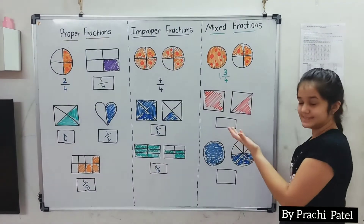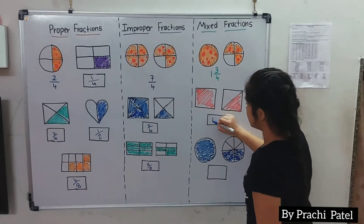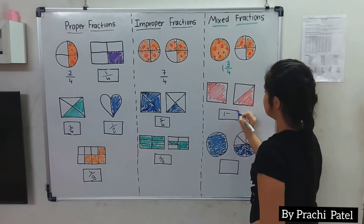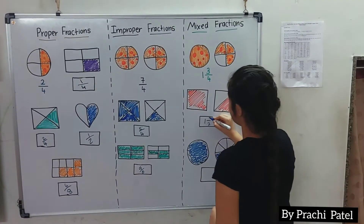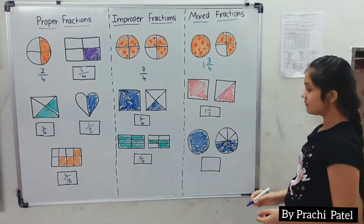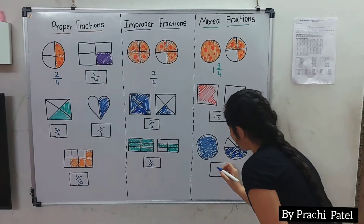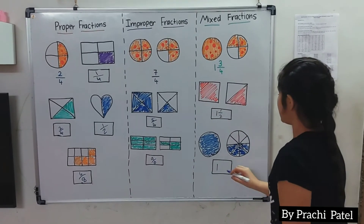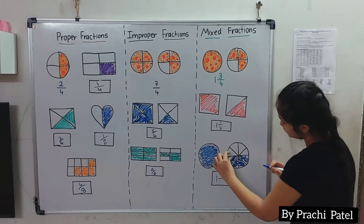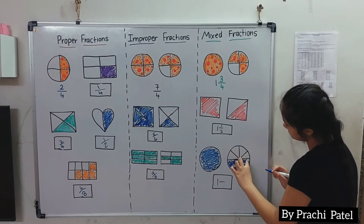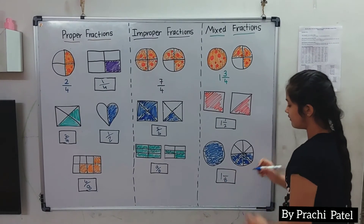Now let's do some more examples. We have 1 whole, so we write 1 in the whole place, then a fraction bar, and 2 pieces with 1 shaded, so we write 1 over 2. For the next one, we write whole 1, then a fraction bar. We have 8 parts in the denominator and 1, 2, 3, 4 are colored, so we write 4 in the numerator.